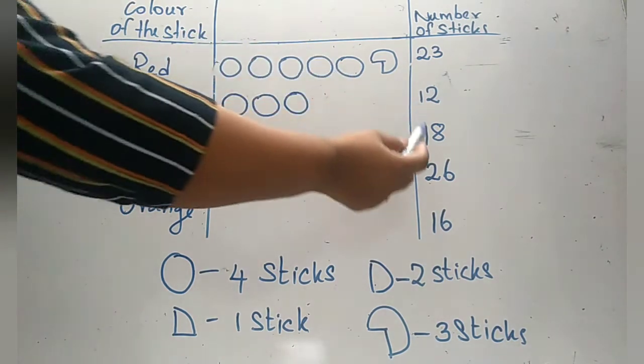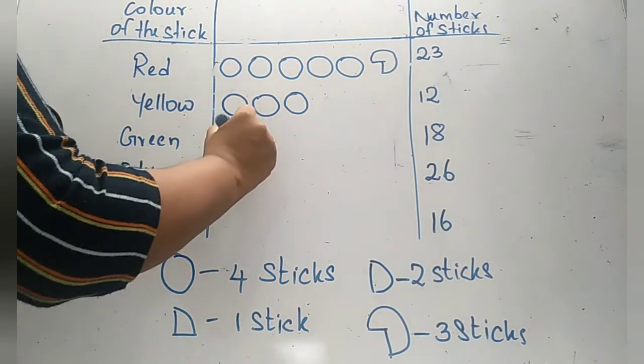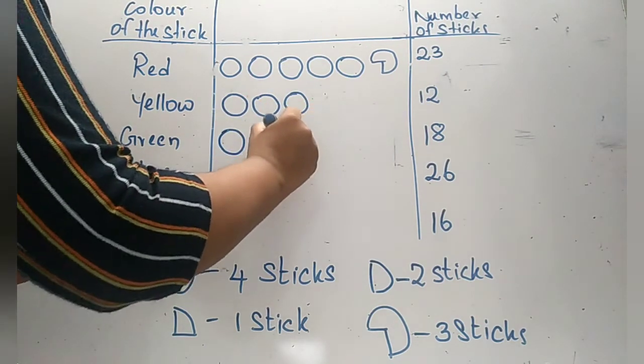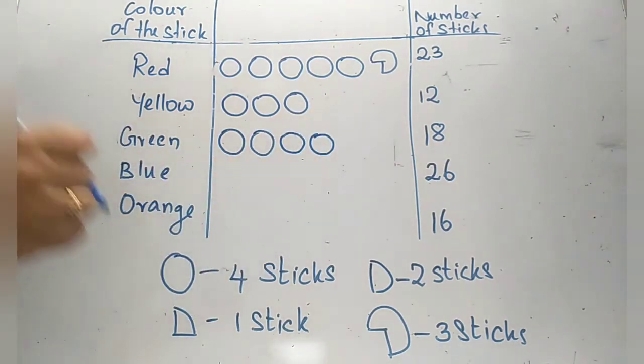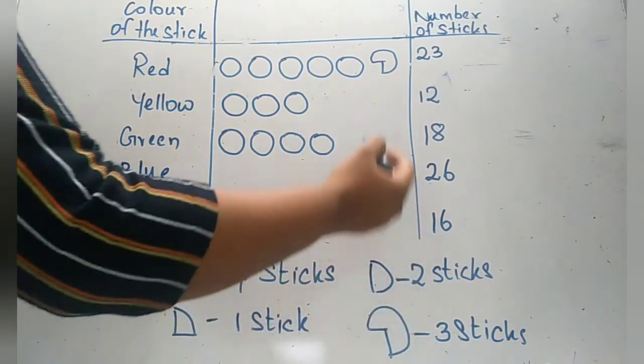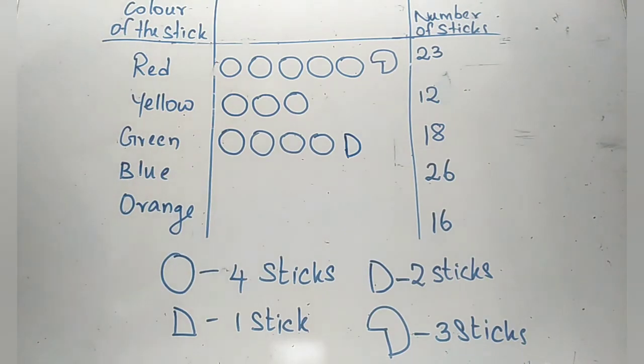The next one is eighteen. This is also not a multiple of four. Let's represent sixteen first. Sixteen is a multiple of four. Four times four is sixteen, so let's draw four circles first. Four, eight, twelve and then sixteen. How much more do we need to represent eighteen? We need two more. Two is actually half of four, so we need to draw a semicircle. Did you understand?